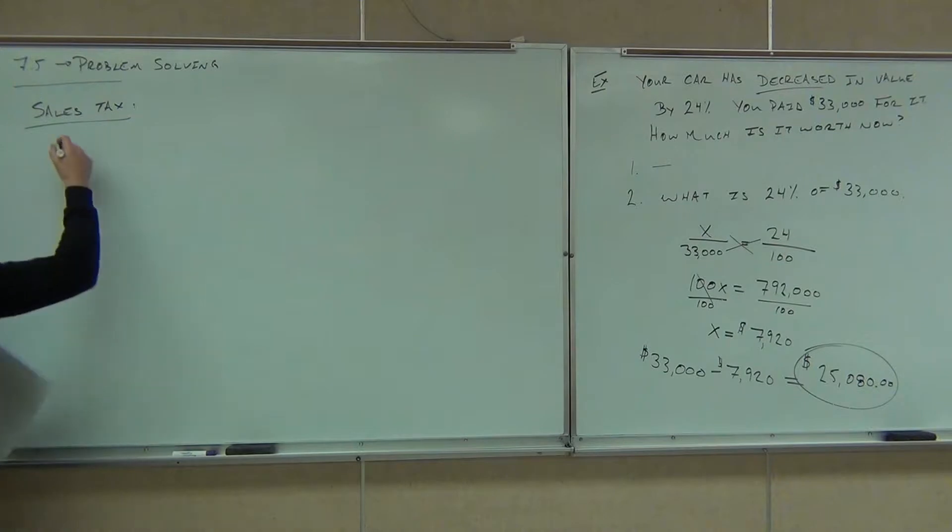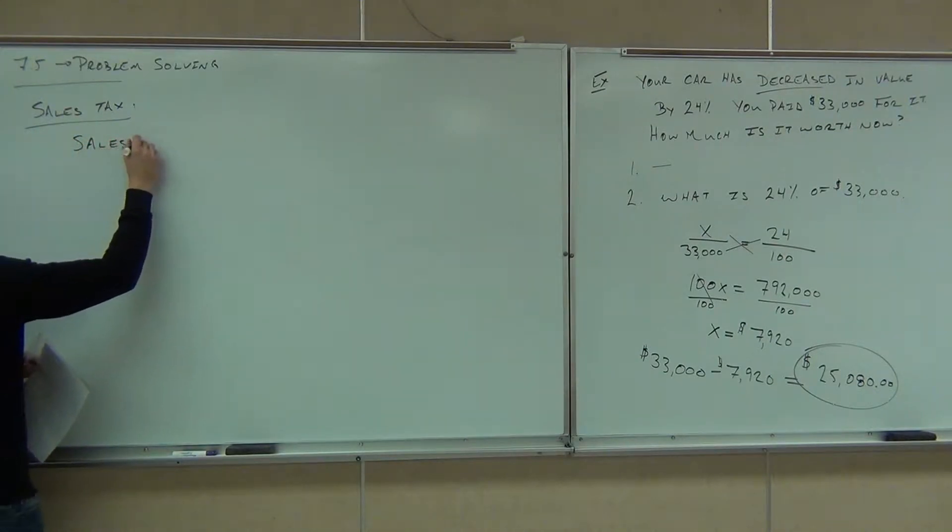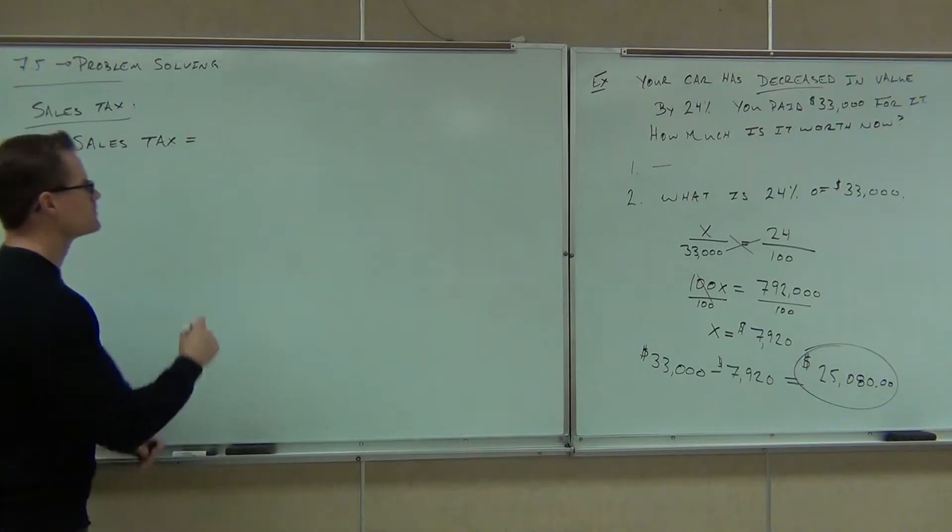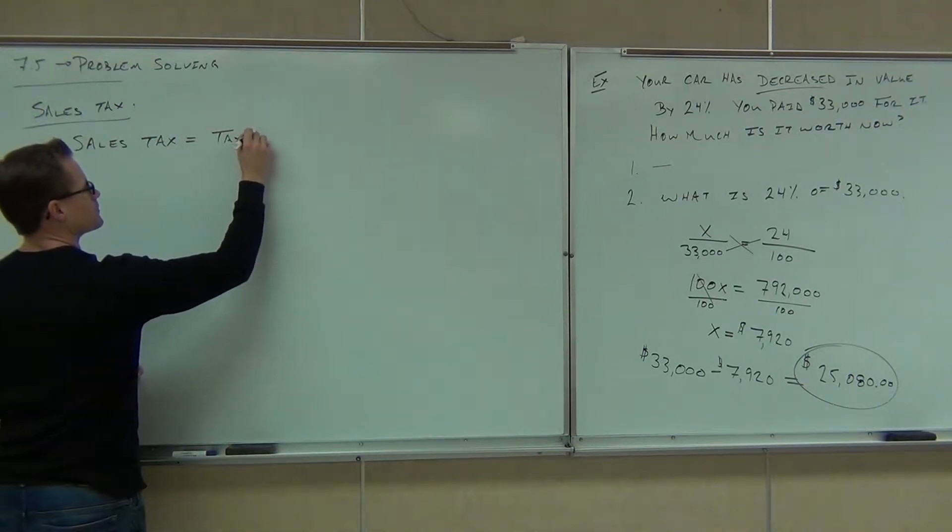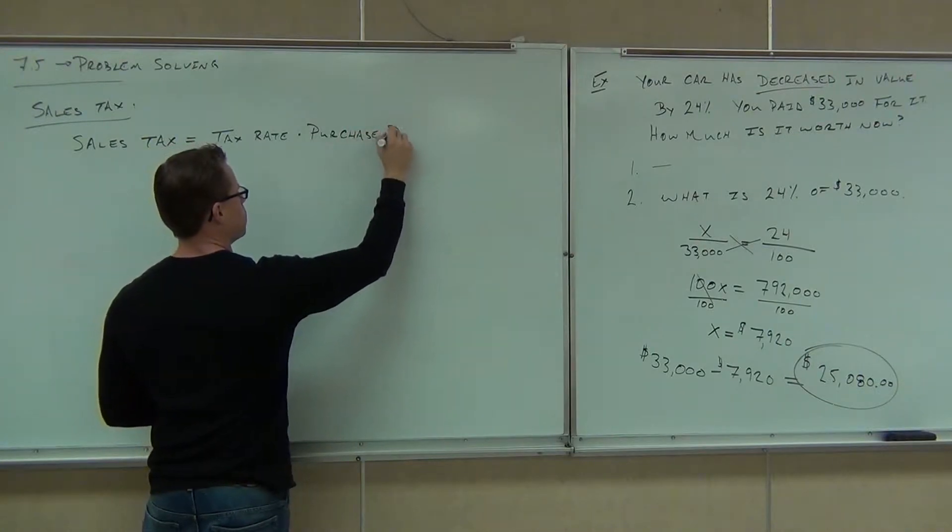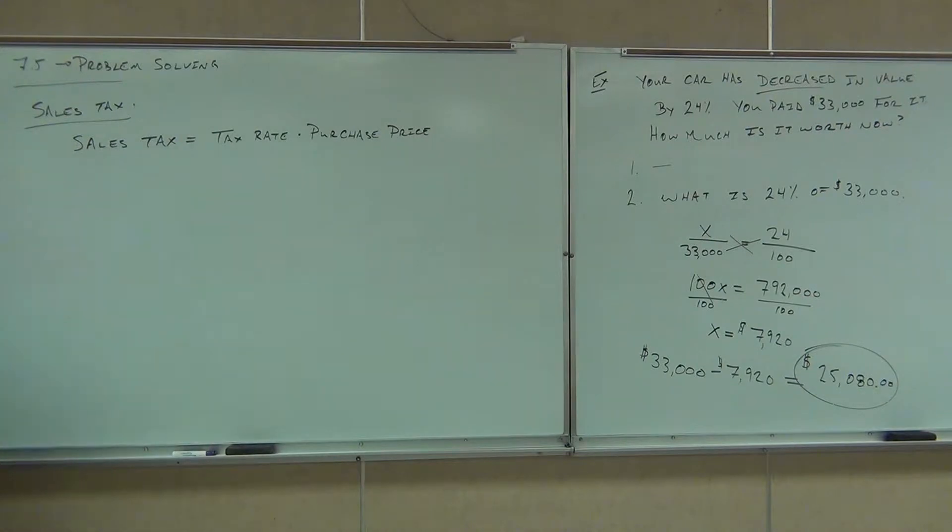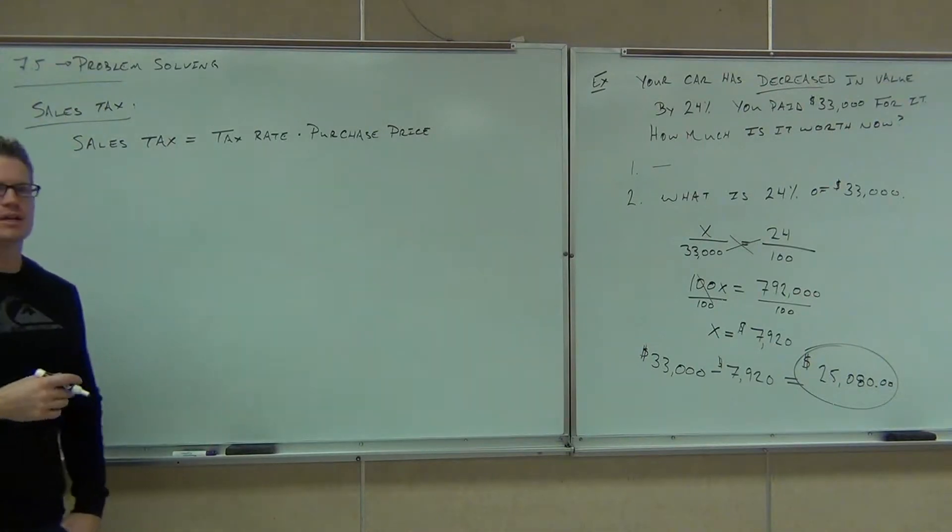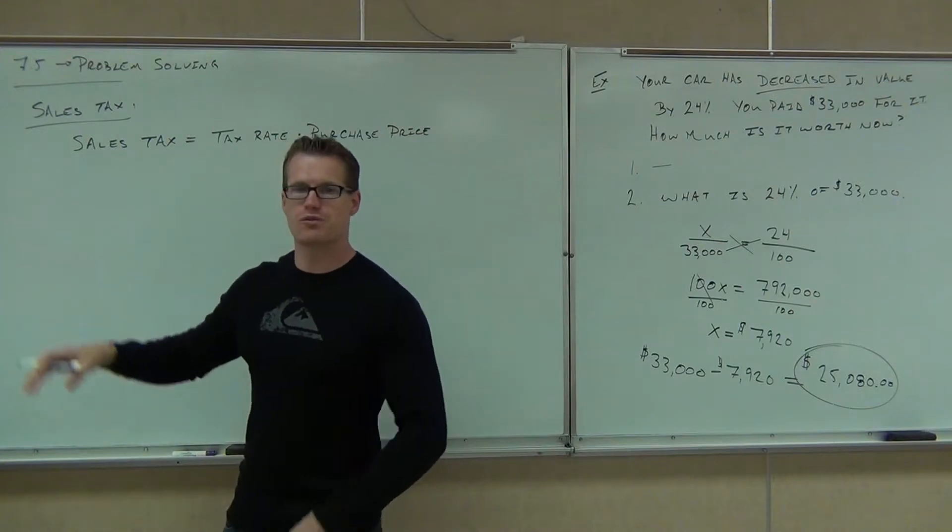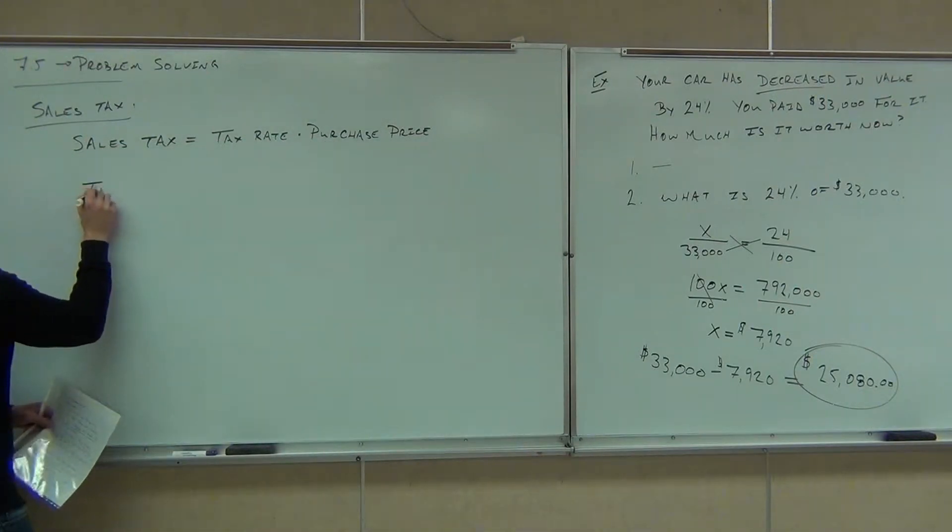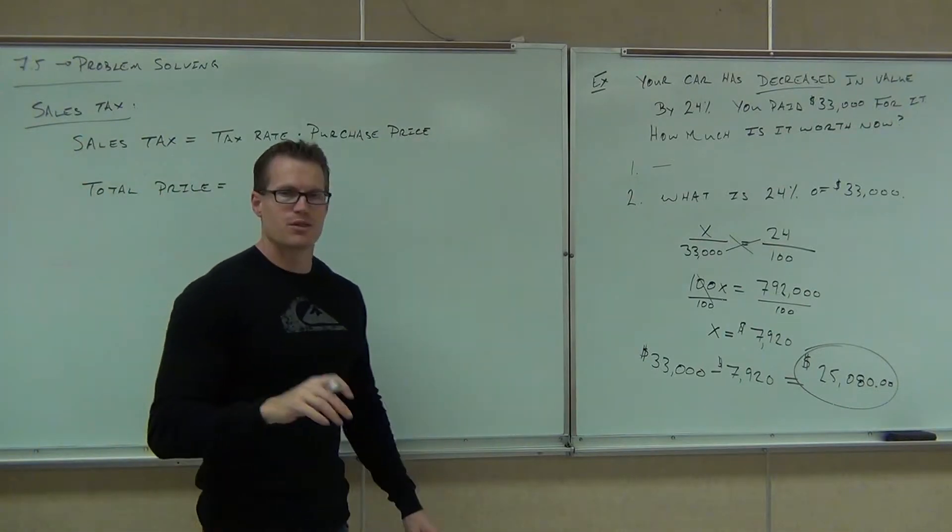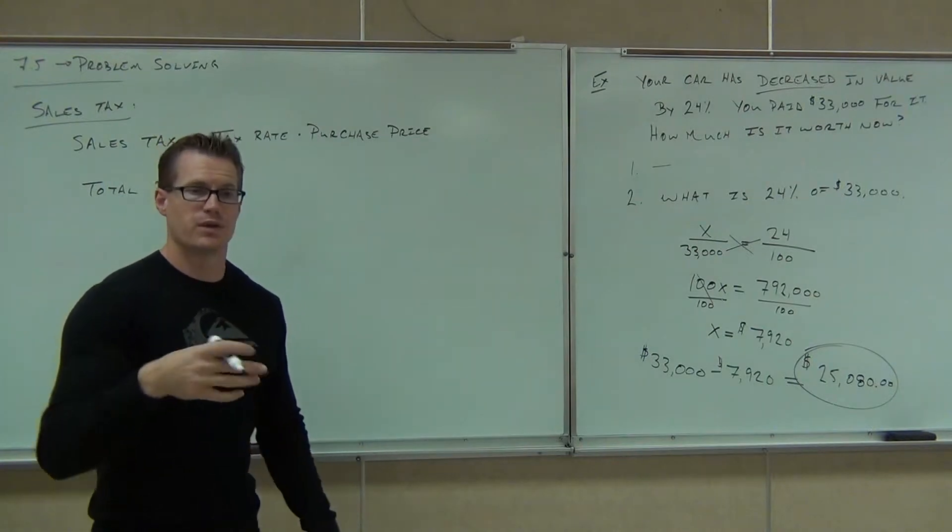Sales tax is found by doing this. It's found by taking your purchase price and multiplying it by the tax rate. That would give you the dollar amount that you're going to get charged extra. So if you find that out, you're saying, okay, I'm going to add that to my bill. So if you want to find out the total price, you're going to add the purchase price, what it says on the tag, and the sales tax, the extra you're going to give the government.